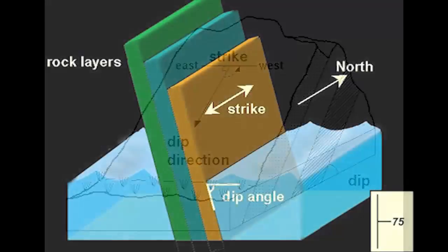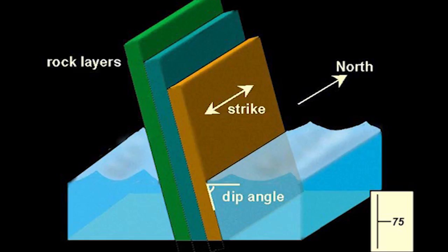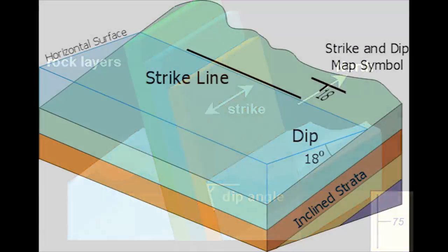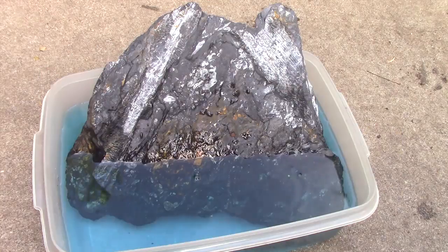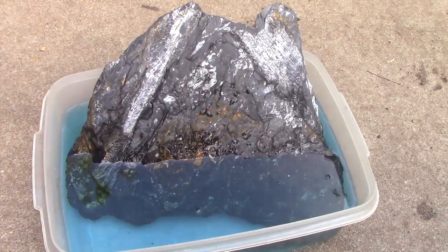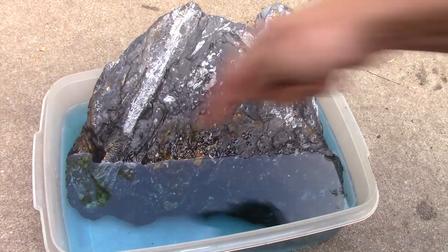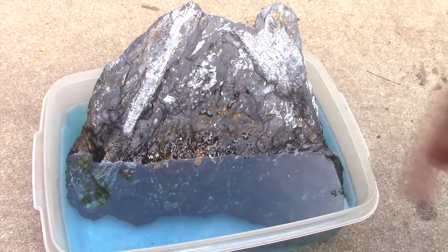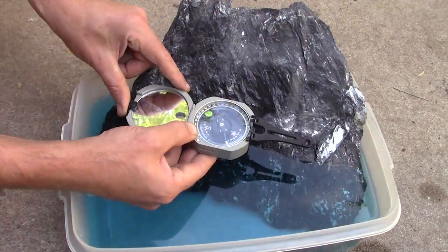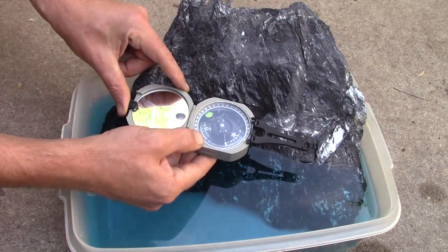To do this we use the concepts of strike and dip. Strike is defined as the direction of the line made by an intersection of an imaginary horizontal plane with the plane of the structure in question. If we were to submerge our tilted layer in water, we would see the horizontal water surface intersecting the dipping layer in a line. We use our compass to measure and report the direction of that line.